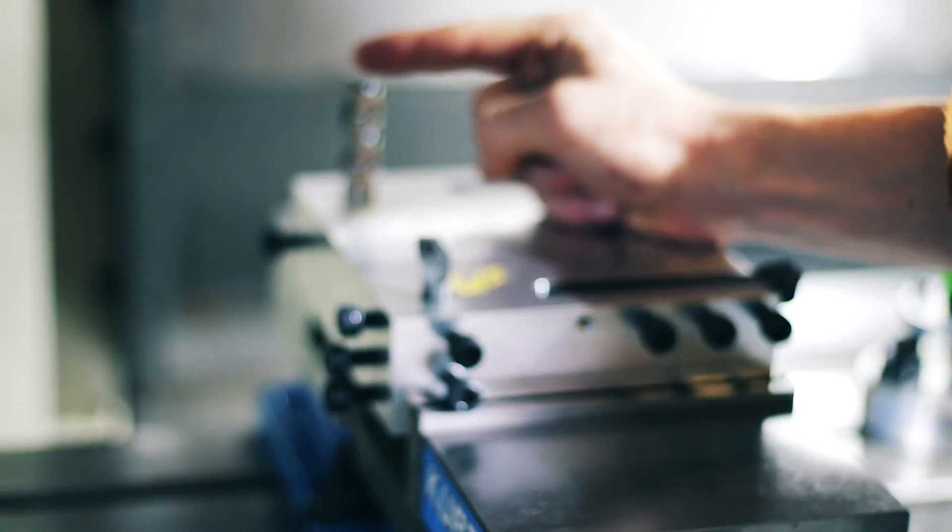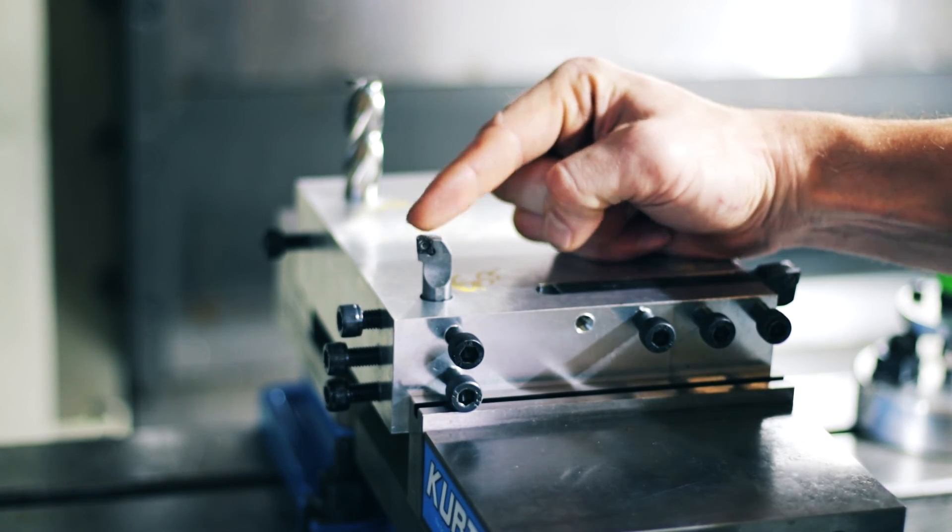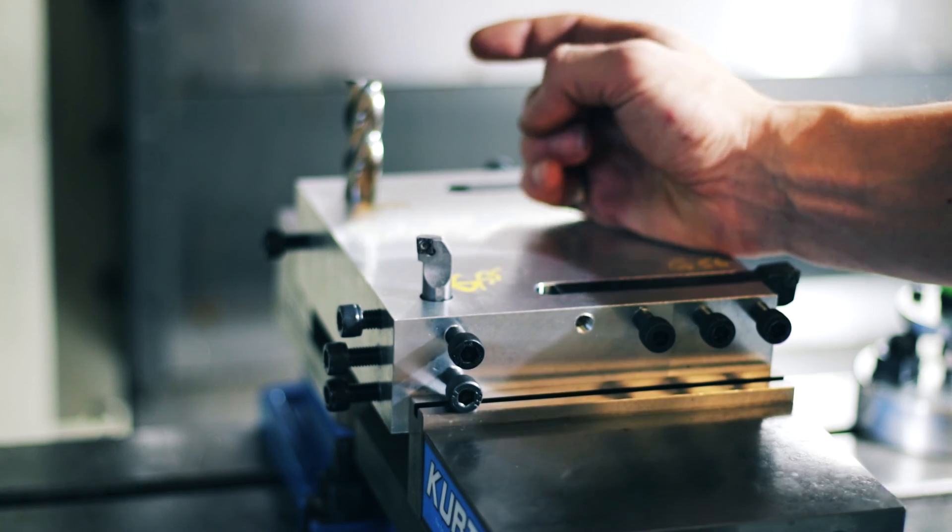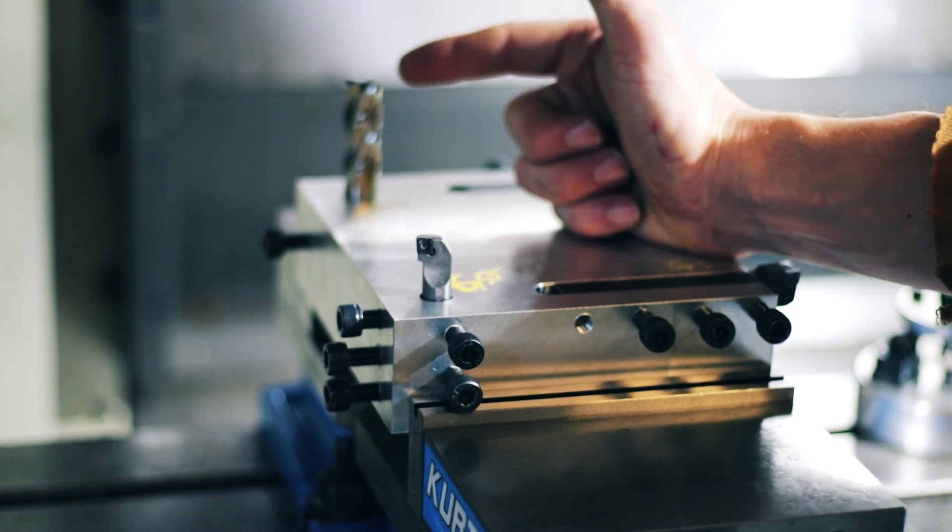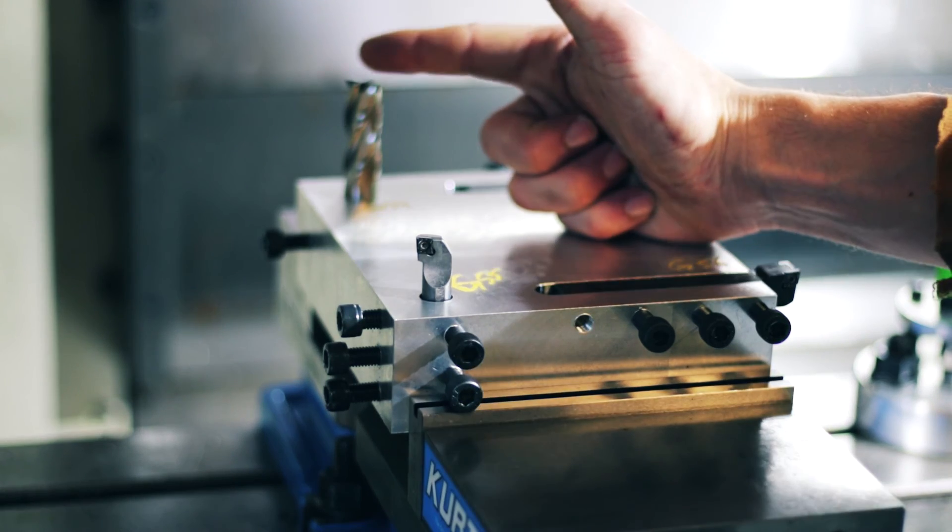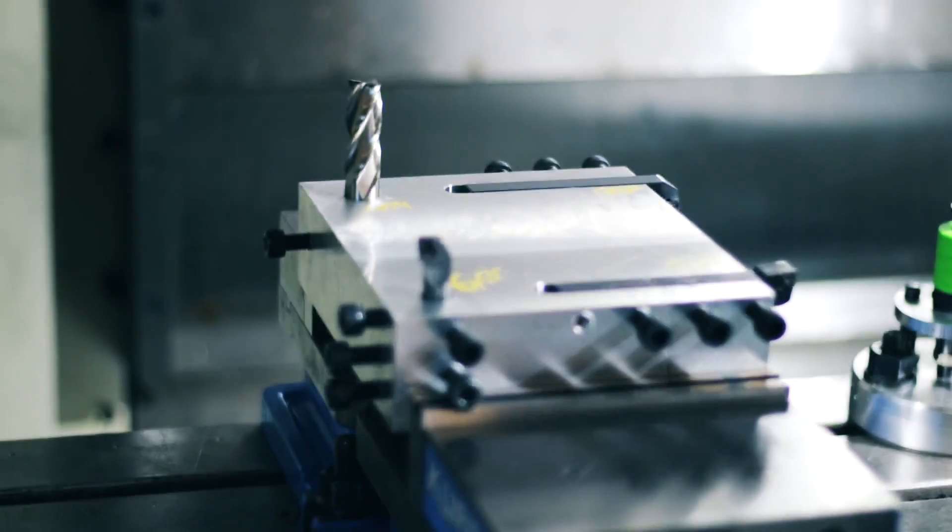So I grabbed a five-eighths end mill so that I could use my 12 mil, 10 mil boring bar without issue. It's making a really great surface actually. The boring bar is doing a way better surface than I thought it was going to, and now I'm actually pretty much going to wipe out the entire surface of this end mill.